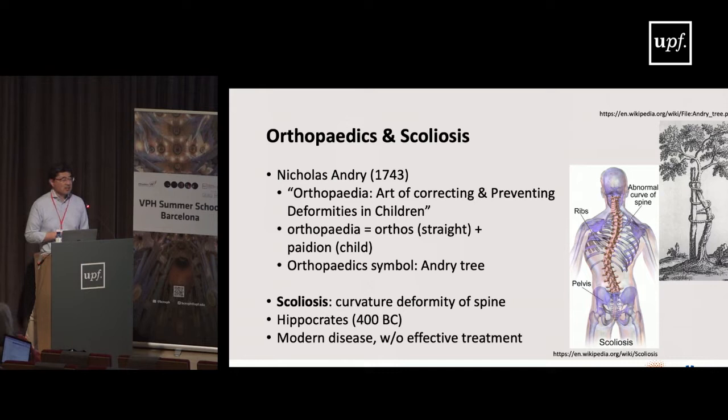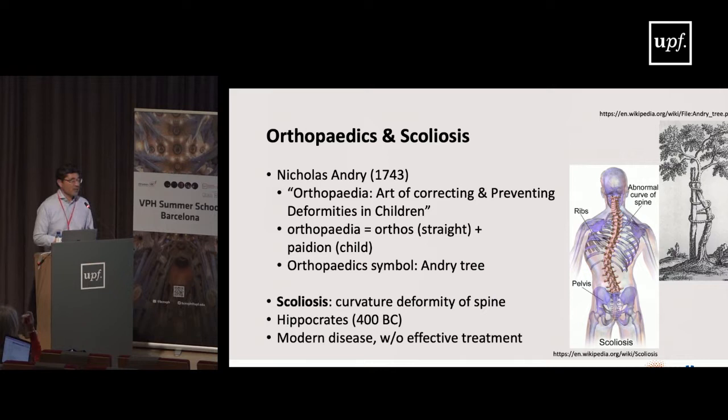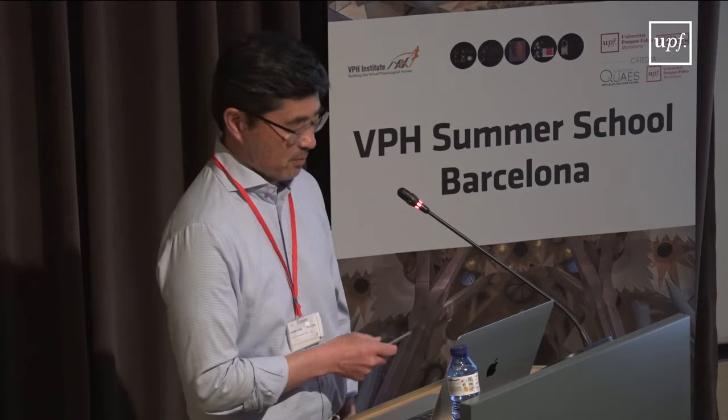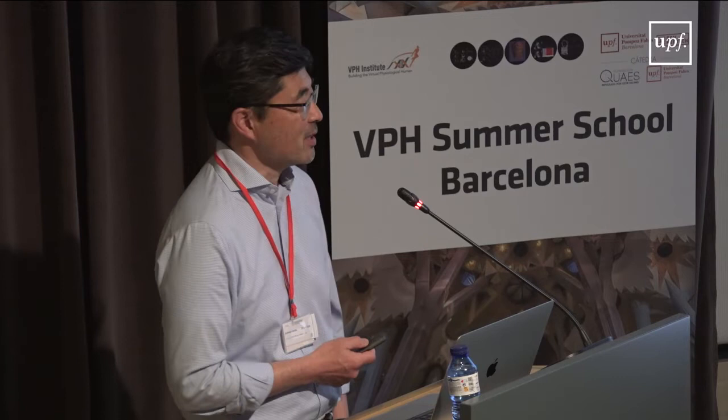Scoliosis is actually a very old disease, first described by Hippocrates over 2,000 years ago — around 400 BC. The modern disease is not much different from what Hippocrates described. Also, since the time of Hippocrates, there has been no effective treatment to cure the disease. We have ways of managing it, but curing it is still not possible, which is quite remarkable given the amount of time people have spent studying it. So what is adolescent idiopathic scoliosis? It is the most common form of scoliosis in our population.